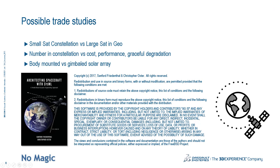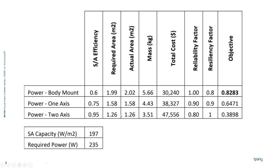Coming back to the theoretical part: from the book 'Architecting Spacecraft with SysML' by Sandy Friedenthal and Christopher Oster from Lockheed Martin — with proper rights — they describe different alternatives in satellite architecture: small-sat constellation versus flatsat and GEO, number in constellation versus cost-performance, graceful degradation, and body-mounted versus gimbaled solar arrays, which we actually evaluate. At different levels we can evaluate different alternatives with criteria like mass and reliability — we use just those two, but you could use more.